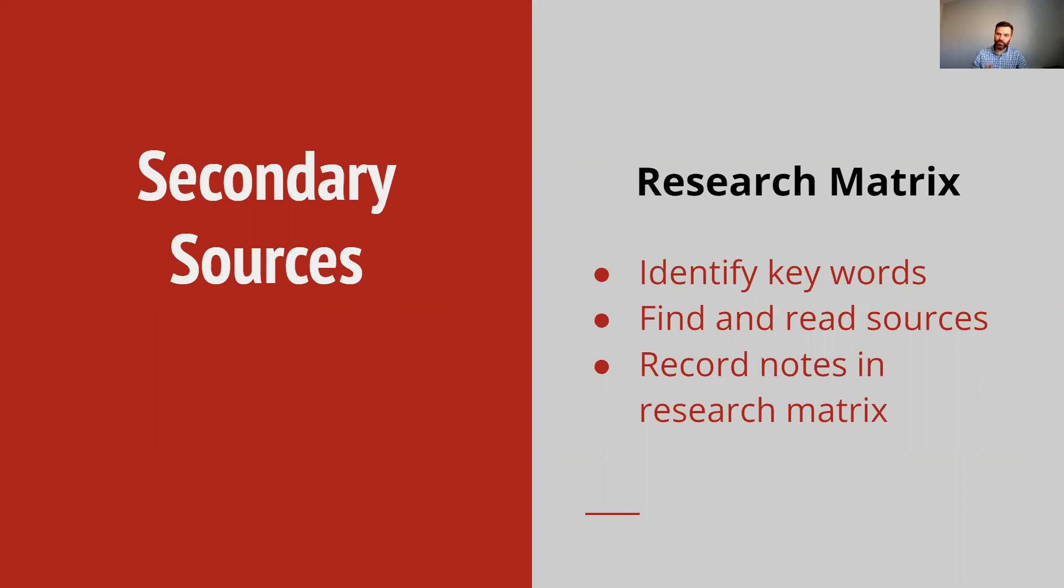You'll probably use the SU library or Google Scholar online, whichever sources help you find good reliable information. You're going to read those sources and then record that information in a research matrix. I put the sources each on a different line of a spreadsheet, or you could use a table in Microsoft Word, and I list all the reference information I need: the author's name, the date, the title of the article or book, and the publication information, so I've got all the information for my reference page ready.